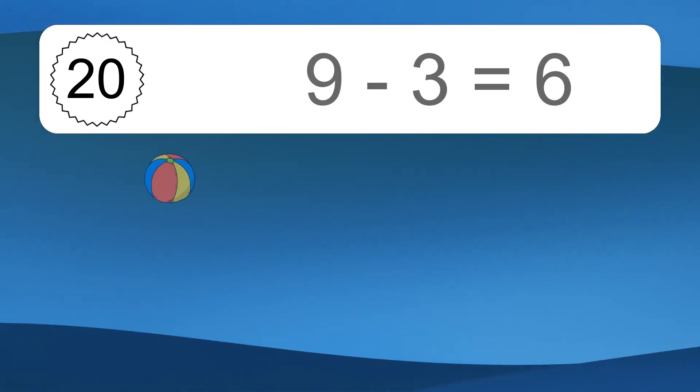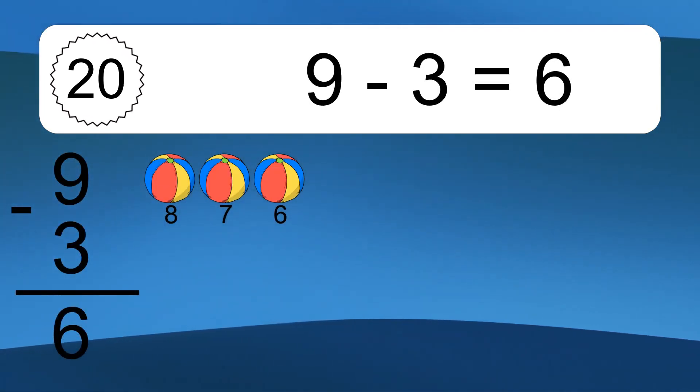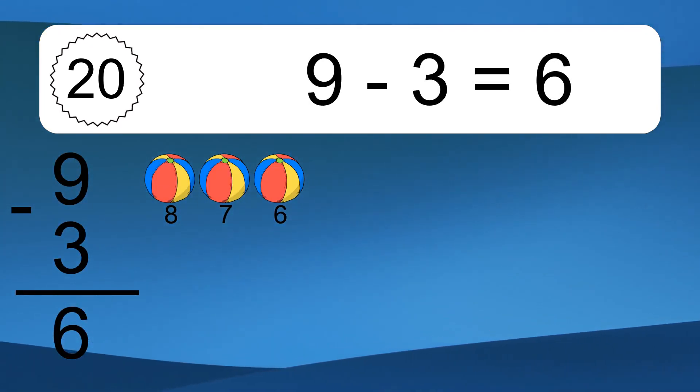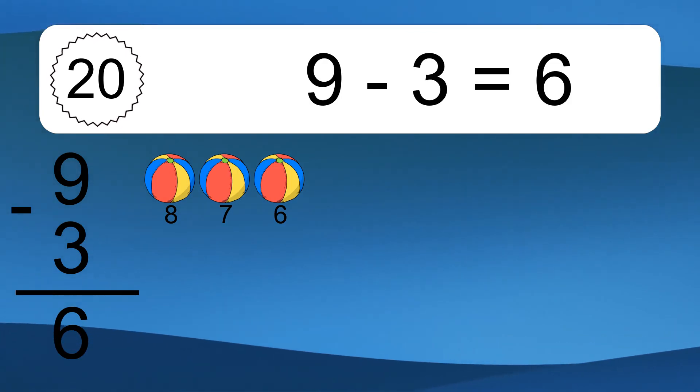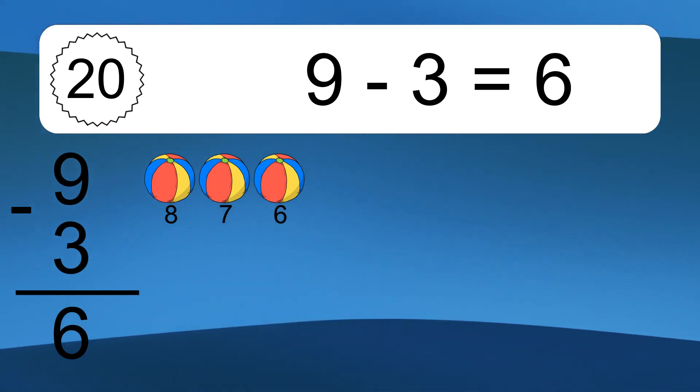9 minus 3 equals what? 9 minus 3 equals 6. Let's count it. 8, 7, 6.